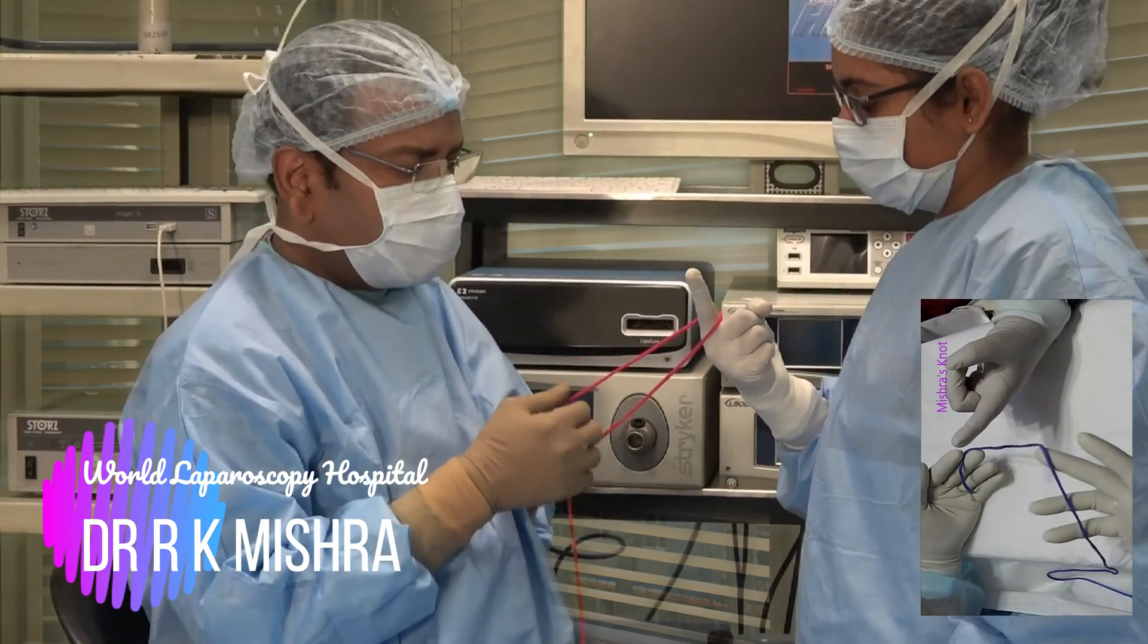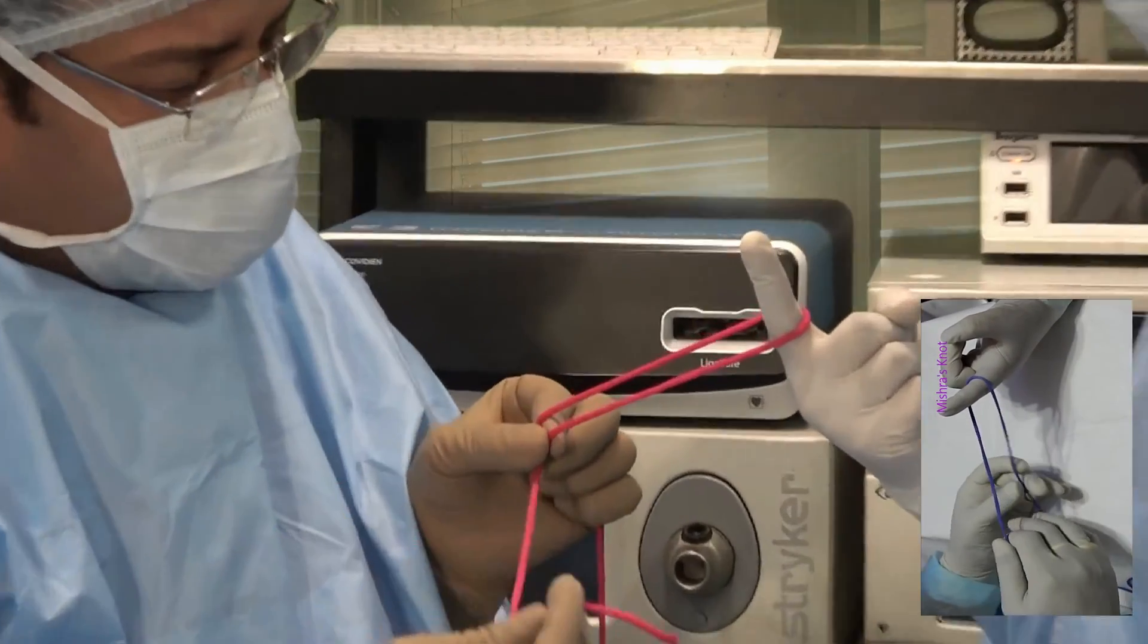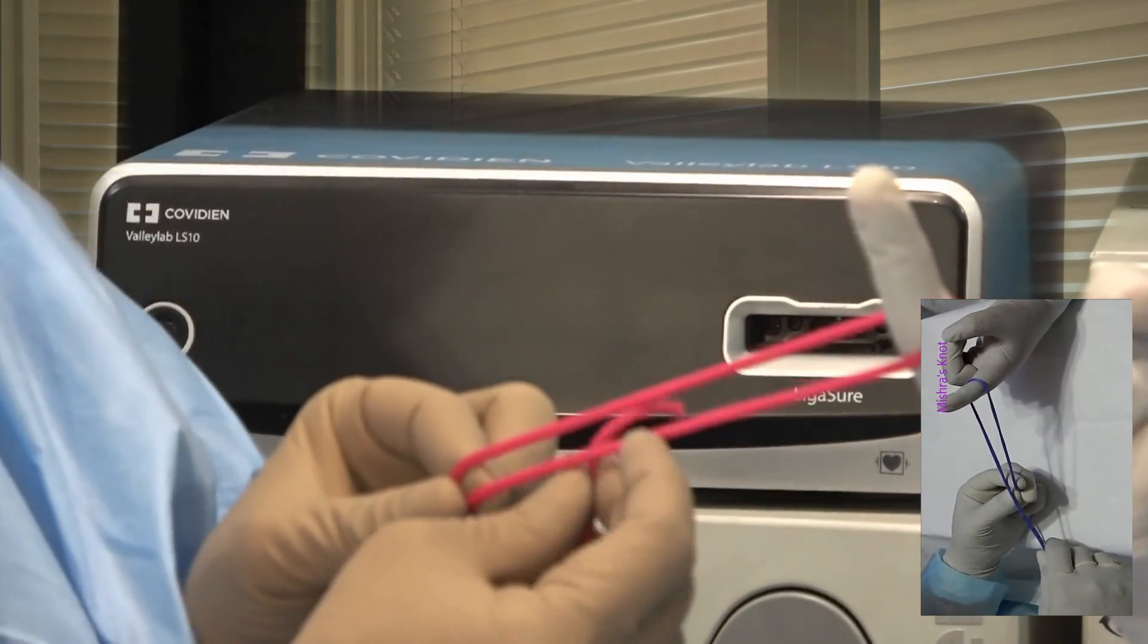You will ask the assistant for the finger and the shorter will be over the longer. Just like Roeder's knot, here also a single hitch will be taken first.